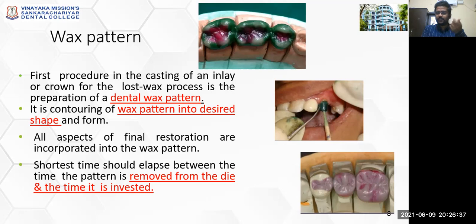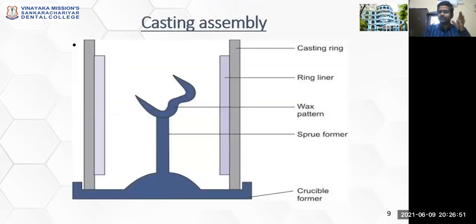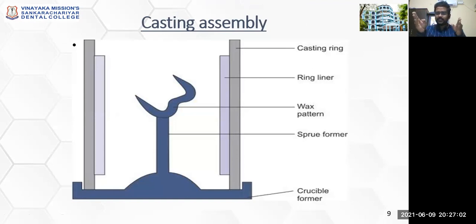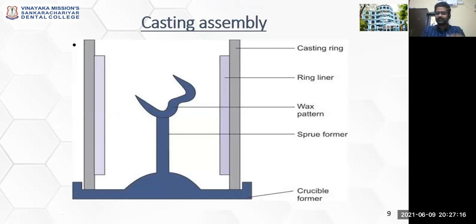Once you are done with your wax pattern fabrication — whether for a three-unit fixed prosthesis, a direct intraoral prosthesis, or a wax pattern for an inlay or a complete-coverage crown — once the wax pattern is ready, you should proceed for the next step: assembling the wax pattern with your sprue into a casting ring and casting crucible, step by step, so that you can pour your investment material for the next procedure.